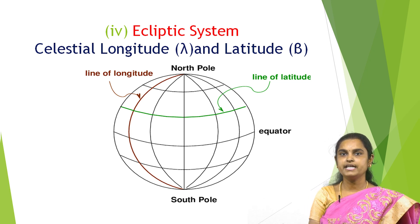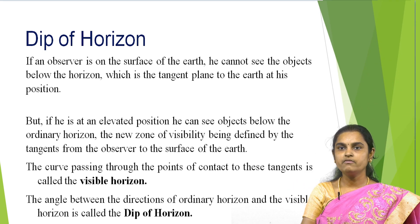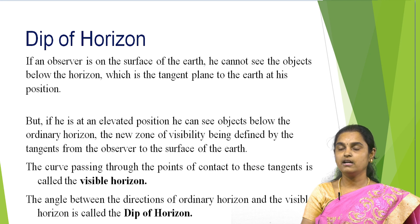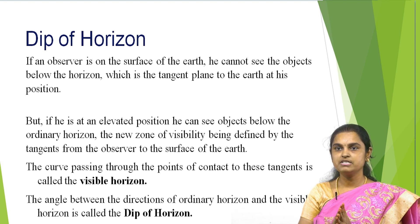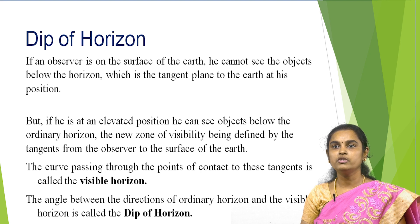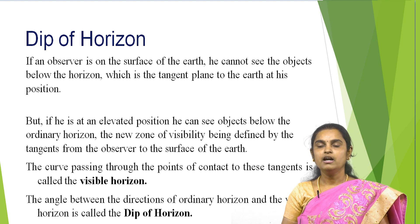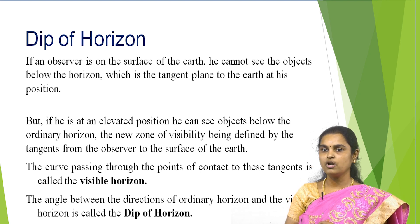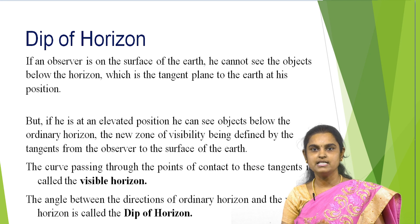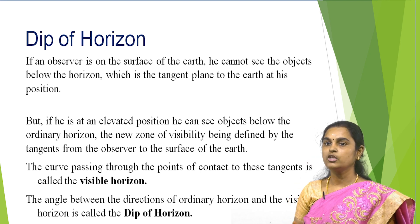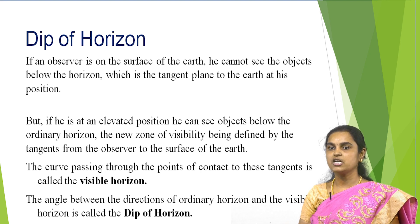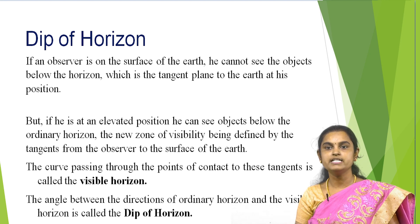Now we are going to see what is the dip of horizon. Imagine an observer on the surface of the earth — he cannot see objects below the horizon, which is the tangent plane to the earth at his position, called the invisible horizon. If the observer is at an elevated position, he can see objects below the ordinary horizon. The new zone of visibility is defined by tangents from the observer to the surface of the earth, and the curve through the points of contact is called the visible horizon. The angle between the direction of the ordinary horizon and the visible horizon is called the dip of horizon.